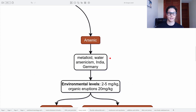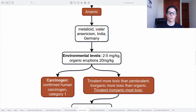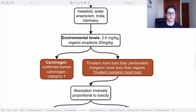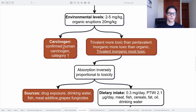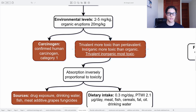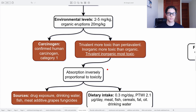Moving on, we have arsenic — this is a metalloid. There is water arsenicism in India and Germany, parts of the world with higher concentrations of arsenic in drinking water. Environmental levels are from 2 to 5 milligrams per kilogram, and during volcanic eruptions you can reach levels of 20 milligrams per kilogram — about 4 to 5 times the normal amount. Arsenic is a confirmed human carcinogen, category 1. The trivalent form is more toxic than the pentavalent, and inorganic is more toxic than organic. Therefore, the trivalent inorganic is the most toxic form. Fortunately, absorption is inversely proportional to toxicity, so the trivalent inorganic is absorbed the least.